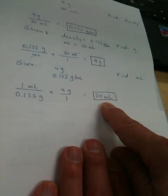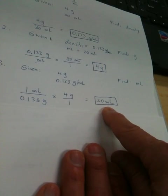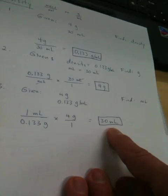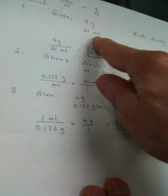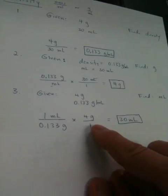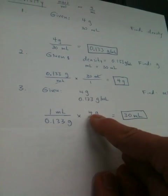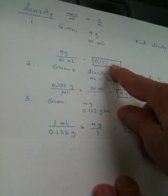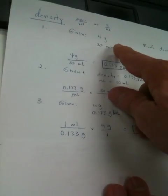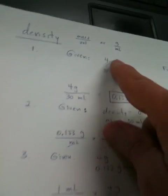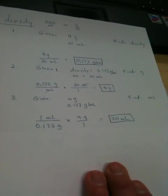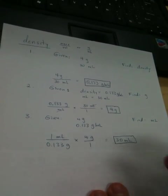Have you noticed that I use the same variables in every case? I started with 4 grams and 30 mils, and I always used 4 grams and 30 mils as my variables. I used the same density that we calculated up here. Am I making sense?